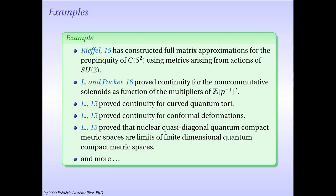Another interesting example of convergence for AF algebras is given by the family of Effros-Shen algebras, later used by Pimsner and Voiculescu in their work on the classification of quantum tori. Given an irrational number theta, we write theta as a limit of its continued fraction expansion and use the coefficients to make an inductive limit of matrix algebras. The resulting Effros-Shen algebra is an AF algebra admitting a faithful tracial state. We were able to prove that the function which to an irrational number associates its Effros-Shen algebra is a continuous function from the usual topology on the irrationals to the topology induced by the dual propinquity. We also showed that any nuclear quasi-diagonal compact quantum metric space is a limit of finite-dimensional compact quantum metric spaces.